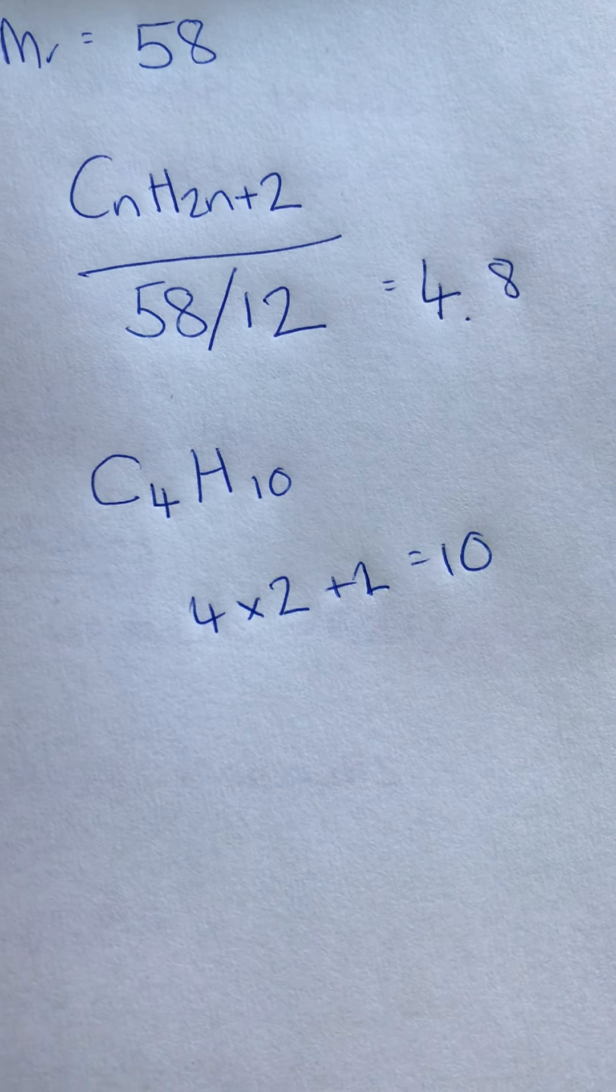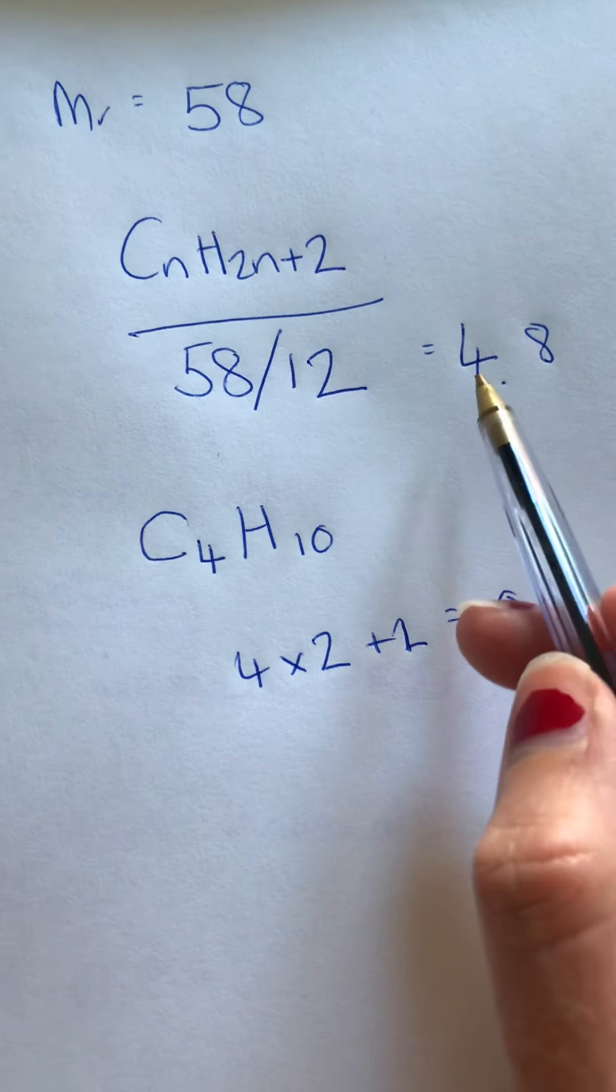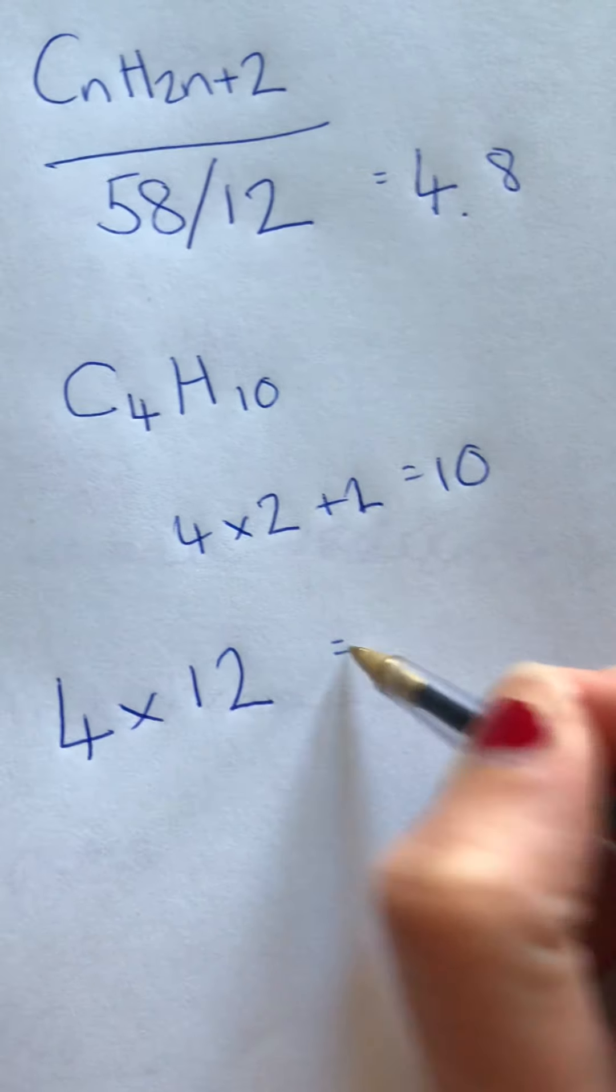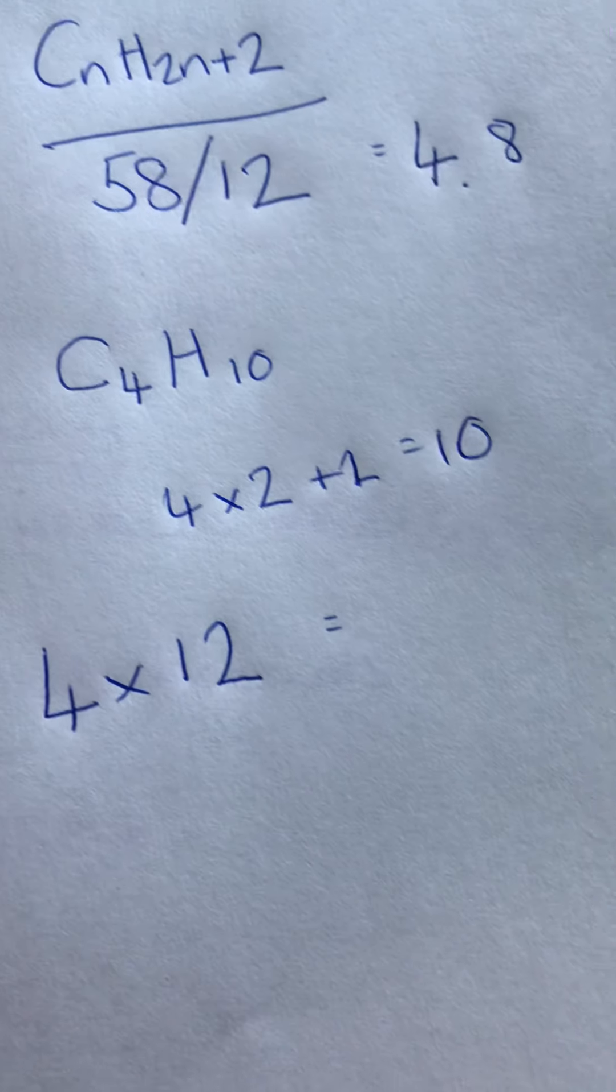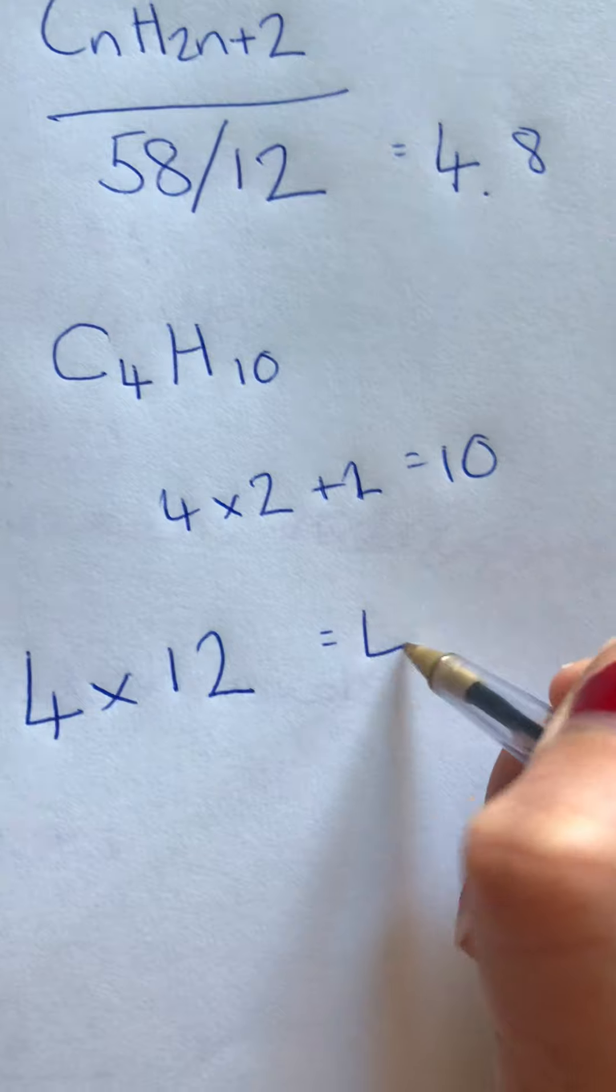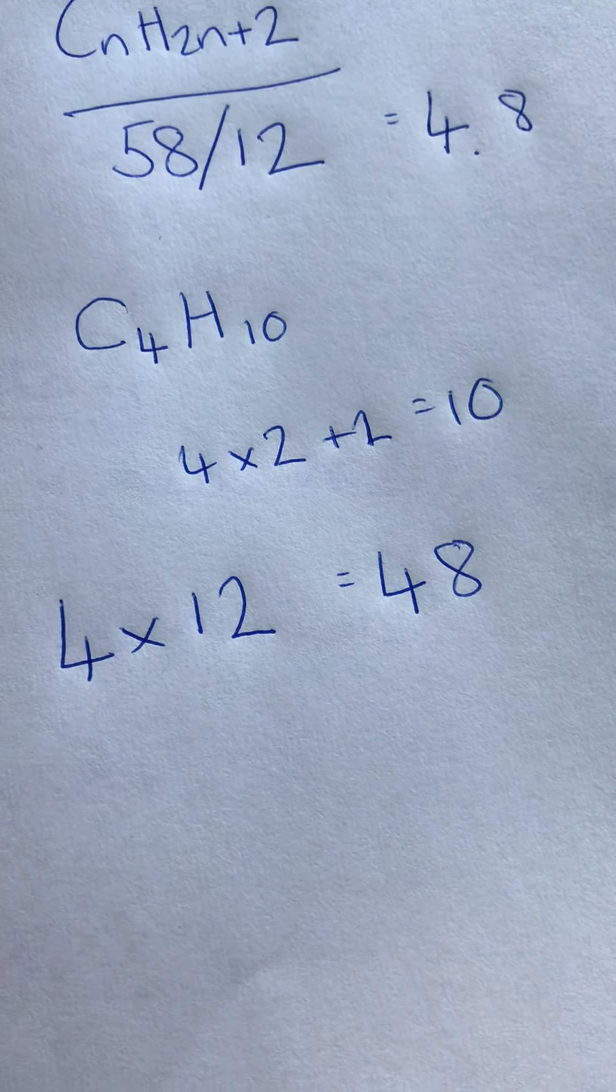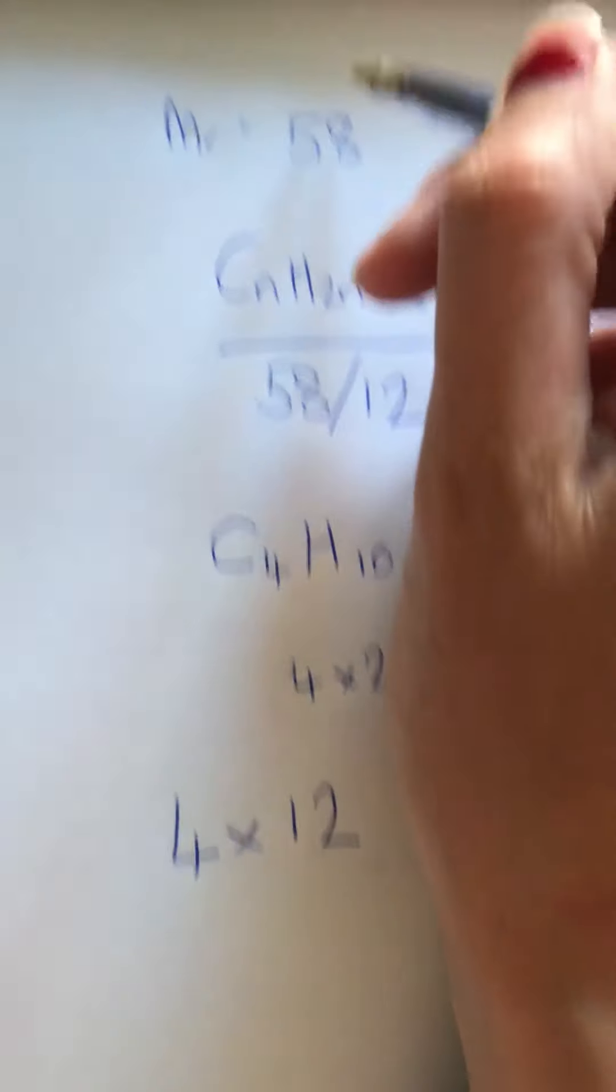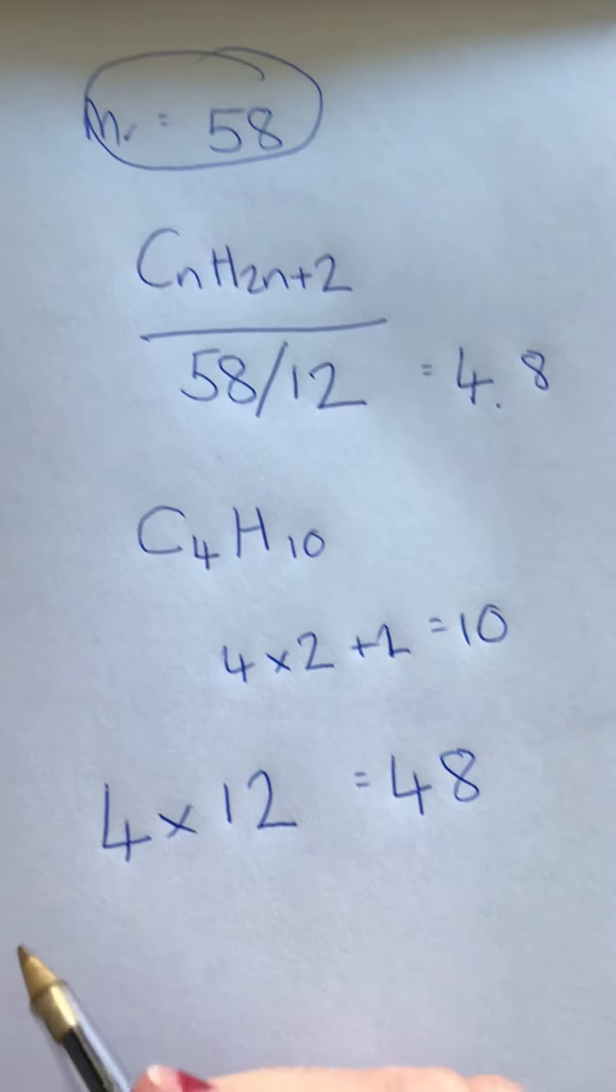Alternatively, you could say we've got four carbons, so you could then say 4 times 12 equals - crikey, what does that equal? 4 times 12 is 48, excuse my awful mental math there. So the amount of the total Mr that is accounted for by carbon is 48.